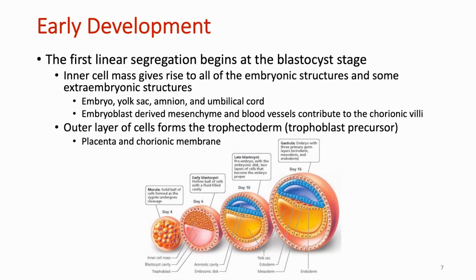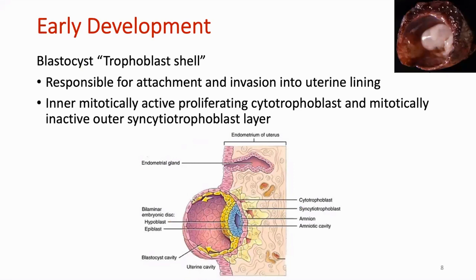The blastocyst stage is when the first linear segregation occurs. The main components are the inner cell mass, the outer trophoblast, and the blastocyst cavity. The inner cell mass will give rise to all of the embryonic structures and some of the extra-embryonic structures, which include the embryo, yolk sac, amnion, and umbilical cord. It first transforms into a bilayered and then trilayered embryonic disc, which is contiguous with two cystic structures: the amniotic cavity and the yolk sac. The outer layer of cells forms the trophoectoderm, the trophoblast precursor, which will give rise to the placenta and chorionic membrane.